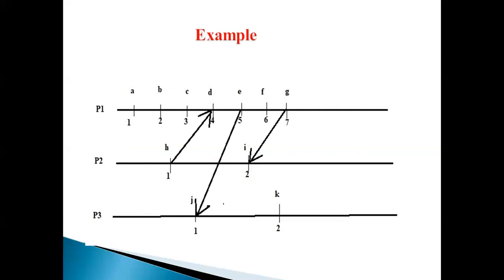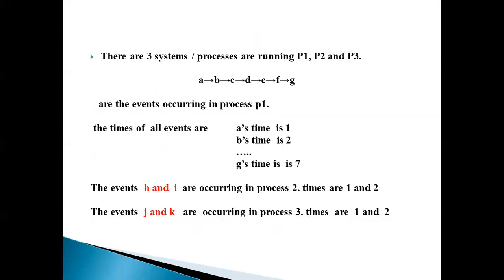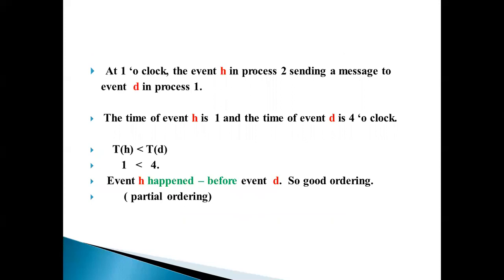Consider 3 processes B1, B2, B3. Events A, B, C, D, E, F, G, R occurred in process B1 and events H and I occurred in process B2. The times of events A through F in B1 are 1, 2, 3, 4, 5, 6, 7. In process B2, times 1 and 2 are for events H and I. In process B3, times 1 and 2 are for events J and K. Event H in Process 2 sends a message to event D in Process 1 at time 1. The time of H is 1 and the time of D is 4. Since 1 < 4, event H happened before event D — good ordering, that is partial ordering.